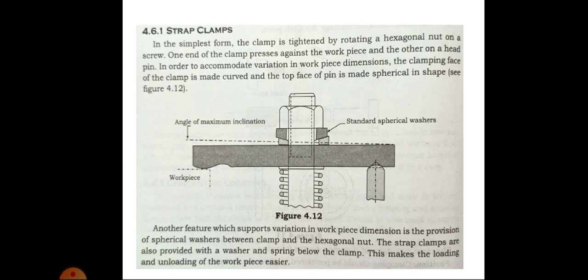The first type is strap clamps. In the simplest form, the clamp is tightened by rotating a hexagonal nut on a screw. One end of the clamp presses against the workpiece and the other on a head pin. In order to accommodate variation in workpiece dimensions, the clamping face of the clamp is made curved and the top face of pin is made spherical in shape.